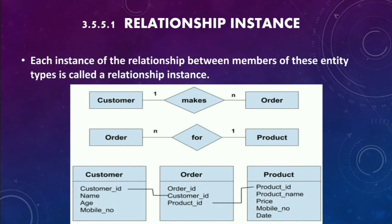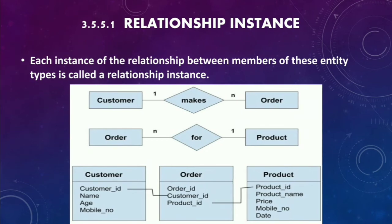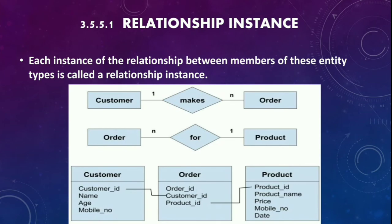Consider online shopping: a customer has a Customer ID and all details are in the Customer entity. When a customer places an order, all orders are maintained in a separate Order table, and product details in another table. Customer ID links to the Order table, and the Order table includes the Product ID. Customer details and product details are maintained separately; when a customer places an order, both details are linked together in the Order entity.